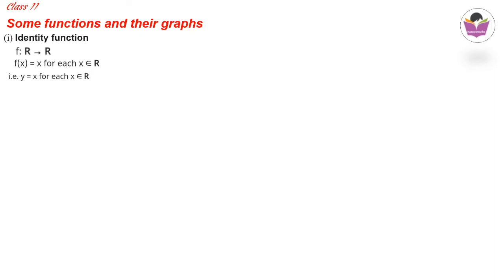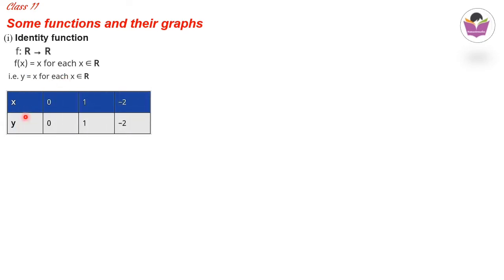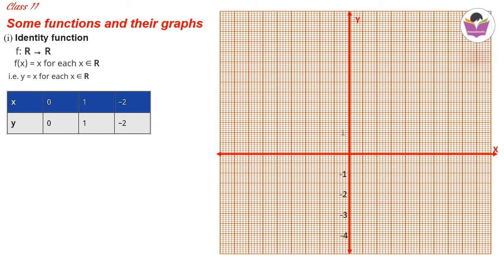To draw the graph of y = x: when x = 0, y = 0; when x = 1, y = 1; when x = −2, y = −2. Plotting these points (0,0), (1,1), and (−2,−2) and joining them gives a straight line — this is the graph of the identity function f(x) = x.